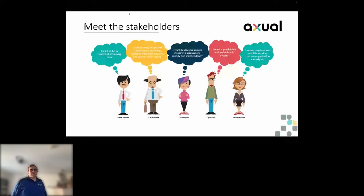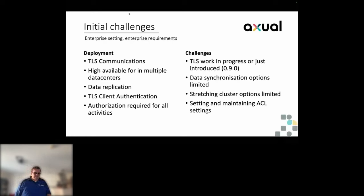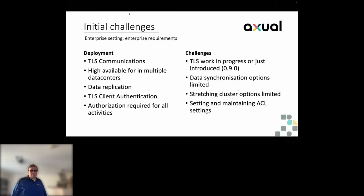We came up with some initial requirements and challenges. For deployment we wanted TLS communications encryption, high availability across multiple data centers, data replication, TLS client authentication, and authorization for all activities. This was 2015 — Kafka was at version 0.9, and Strimzi didn't even exist yet. TLS had just been introduced, MirrorMaker was there but limited. Stretching across data centers was technically possible but challenging, and setting up and maintaining access control was all manual work.